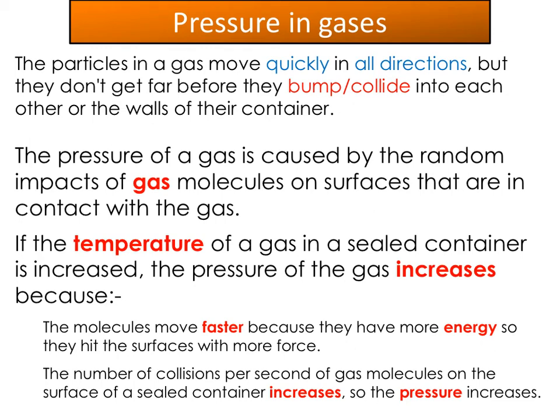The first part of triple-only content is pressure in gases. Gas particles move quickly in all directions but don't travel far before colliding with each other or the walls of their container. The pressure of a gas is caused by the random impacts of gas molecules on the surfaces in contact with the gas. If you increase the temperature of a gas in a fixed container, pressure increases because molecules move faster and hit the surface with more force, and the number of collisions per second also increases.